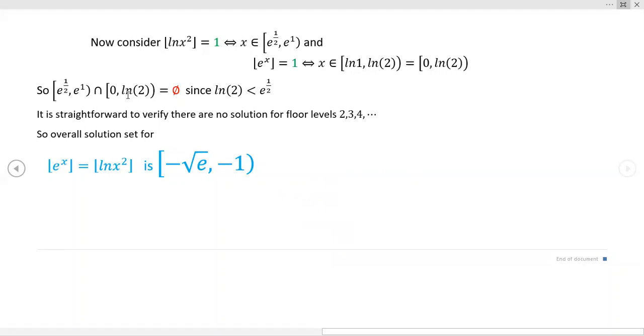You're going to get values of natural logs, which is a very slow growing function compared to the e-function, okay, to the exponential function. And so you're going to have null set intersections for all of these floor levels, two, three, and four, five, all the way out ad infinitum. So the overall solution set is this guy right here.